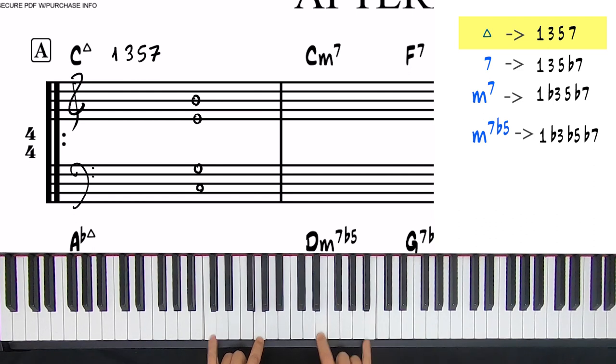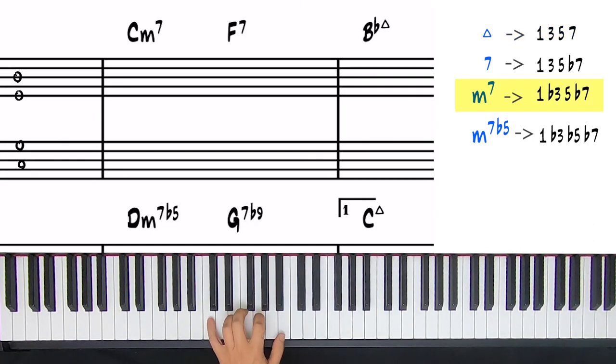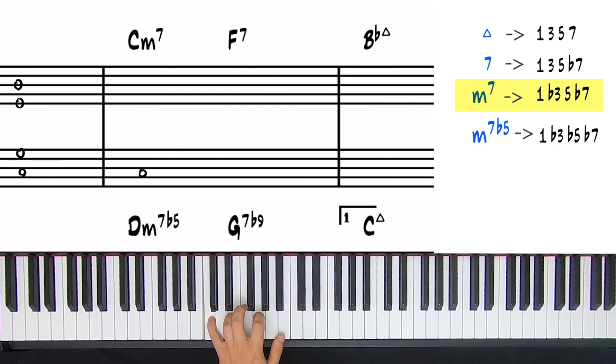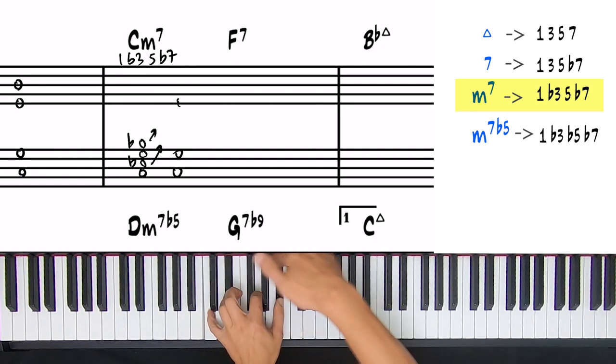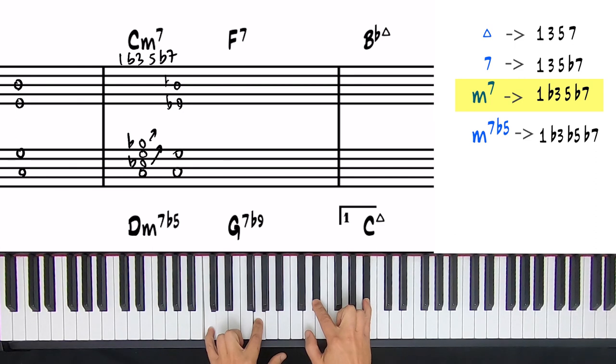Next is a C minor 7. Again I'll write a C on the bass and then the other three notes on top. A minor 7 chord is a 1, flat 3, 5, flat 7, so I'm gonna have to flatten the E to an E flat and the B to a B flat. Then we can move these two notes up to build our drop 2 and 4 voicing.